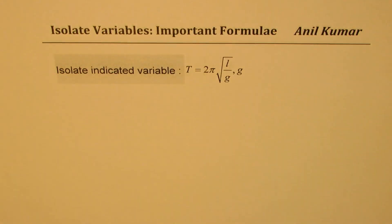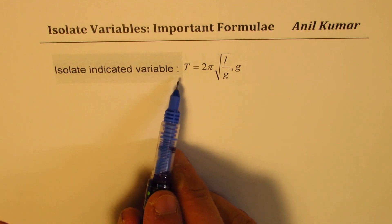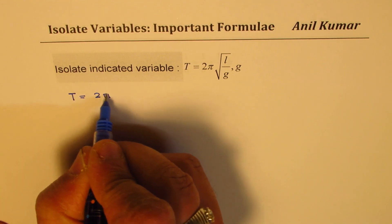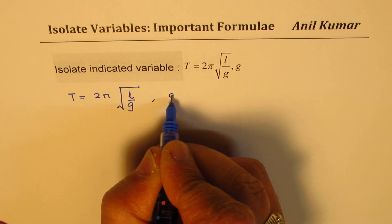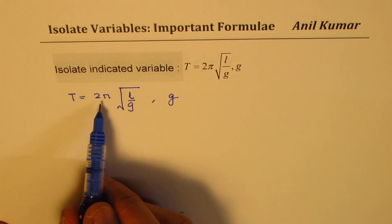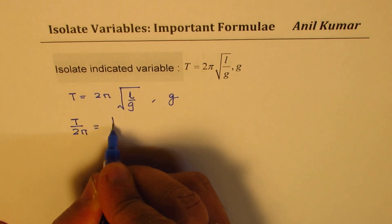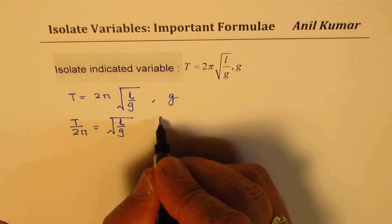Let's move on to slightly more difficult ones. This is a bit tricky — I'd like you to pause the video, solve this, and then look into my suggestions. We need to isolate the variable g from the equation t equals to 2π square root of l over g. First step: divide by 2π, so we get t over 2π equals to square root of l over g.